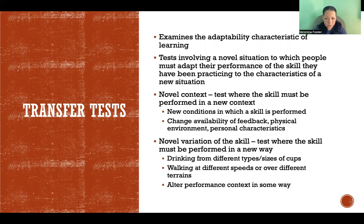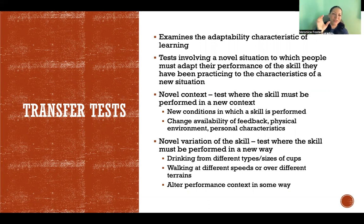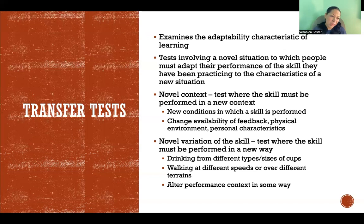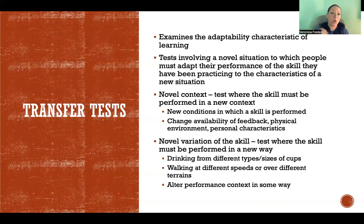A novel variation of the skill means it's the same skill but with some kind of variation. For example, drinking from a cup — if you're good at drinking from a certain cup and I give you a jug or a completely different receptacle, it's essentially the same skill but a new variation. Or walking at different speeds over different terrains — some change to the requirements of the skill that makes it a little different.